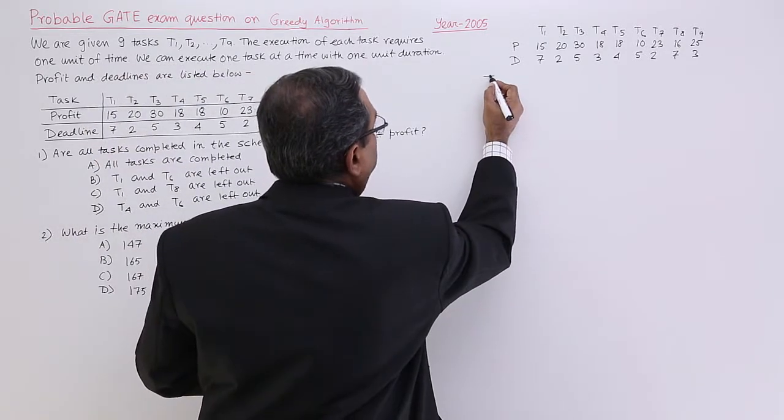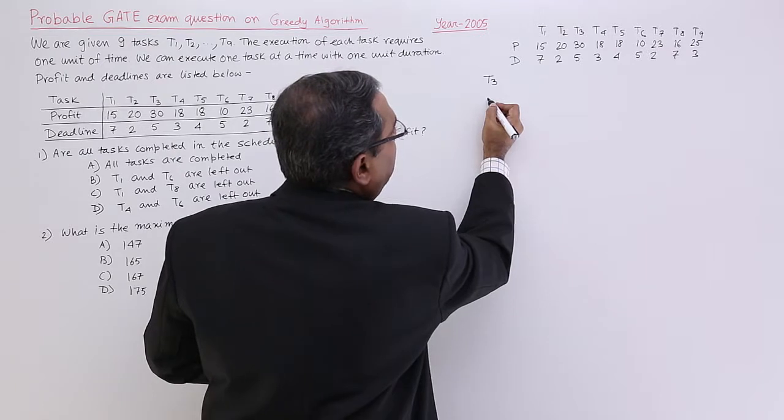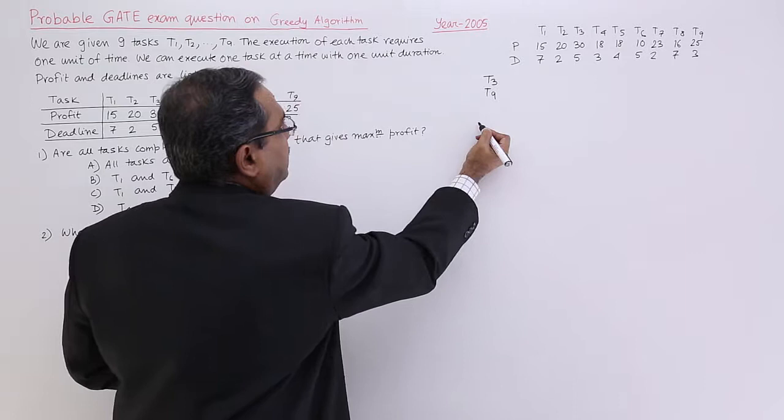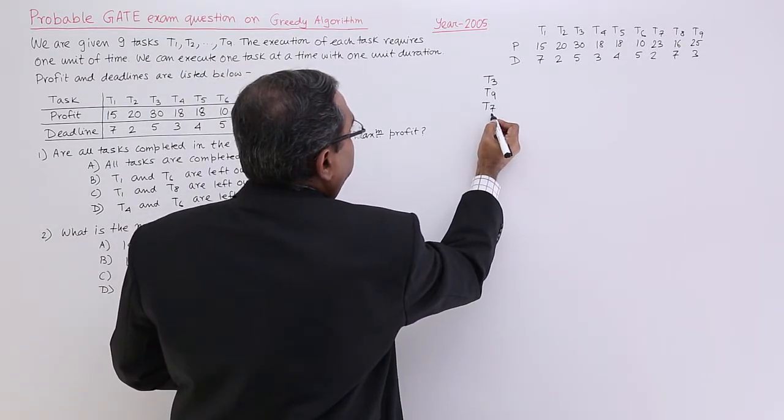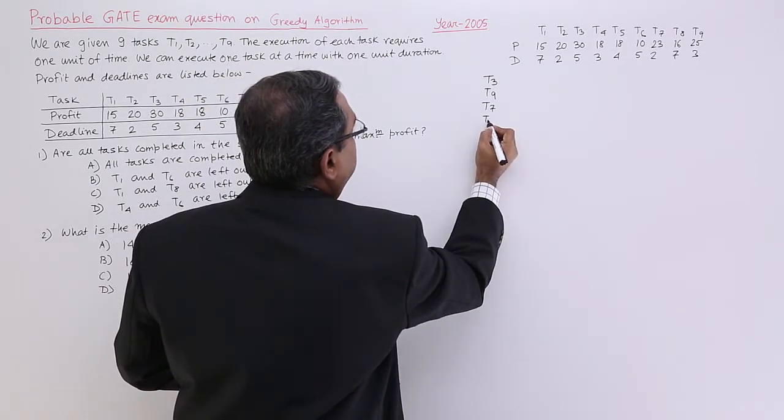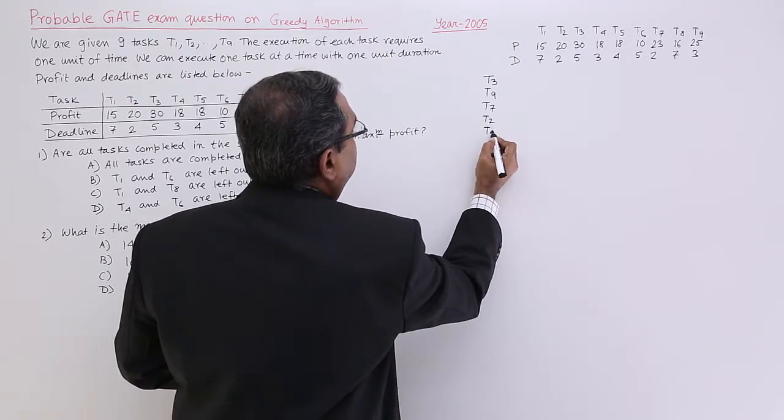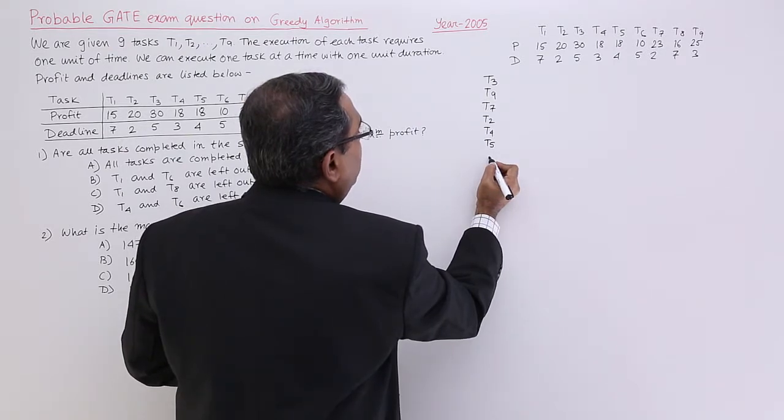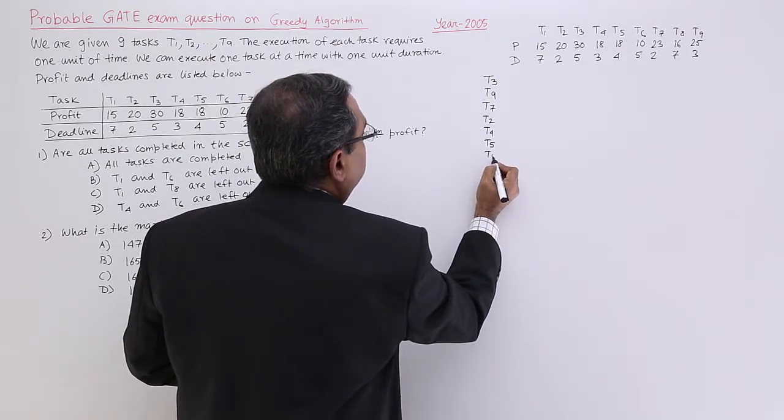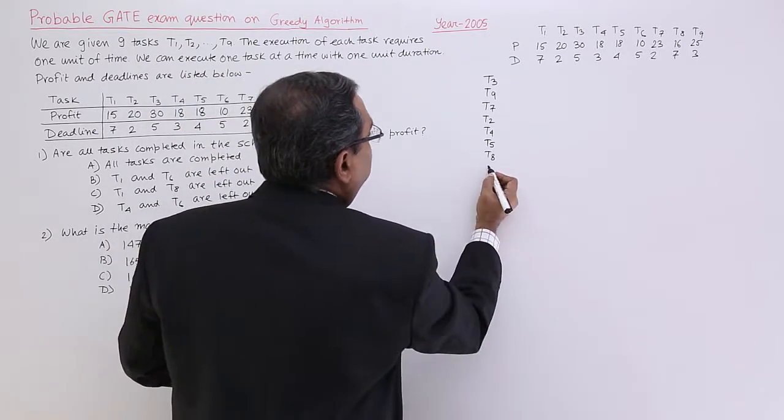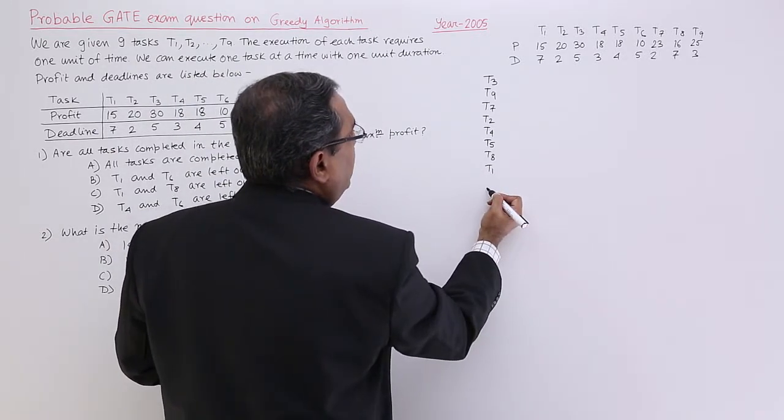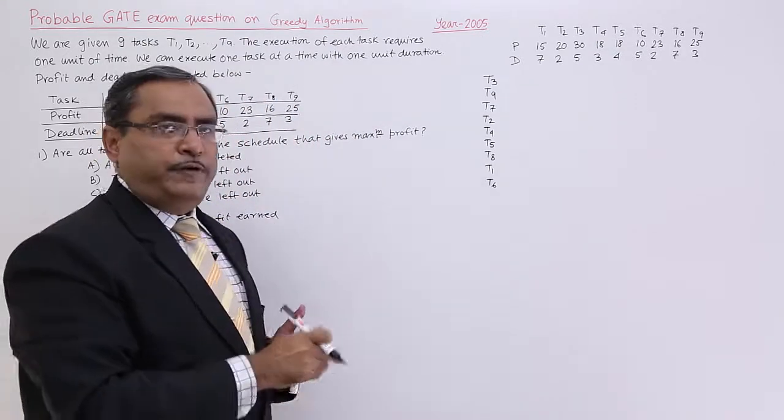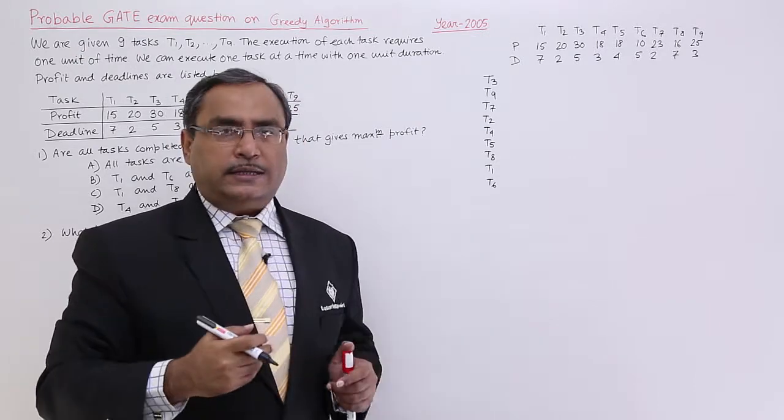At first, T3 will come with profit 30, then T9 with 25, then T7 with 23, T2 with 20, T4 with 18, T5 with 18, T8 with 16, T1 with 15, and T6 with 10. According to the profit decreasing order, I have listed my tasks.